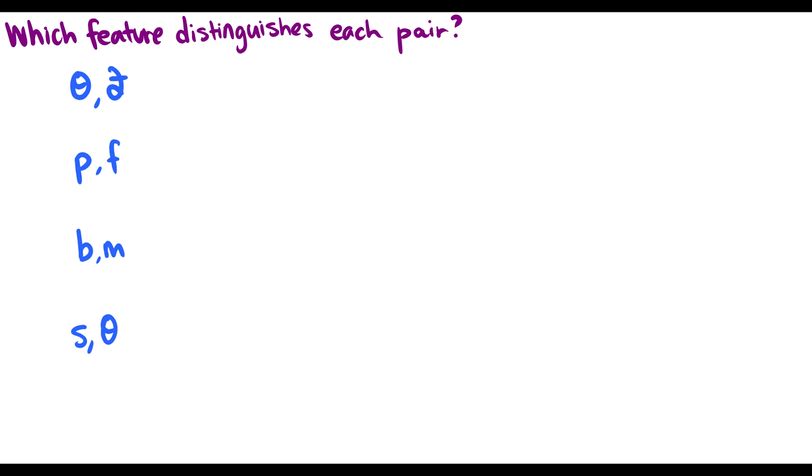So when we separate into natural classes, there's usually one feature that'll separate a group of sounds from another. Here, we're just going to do it with pairs of sounds. So we take two sounds and we say, what feature is different between them? So th and th. The difference here is voicing. So this is the plus or minus voice is the difference between th and th. What about puh and f? Well, one is a stop, and one is a fricative. So it must be a continuant. So the airflow is different between the two.